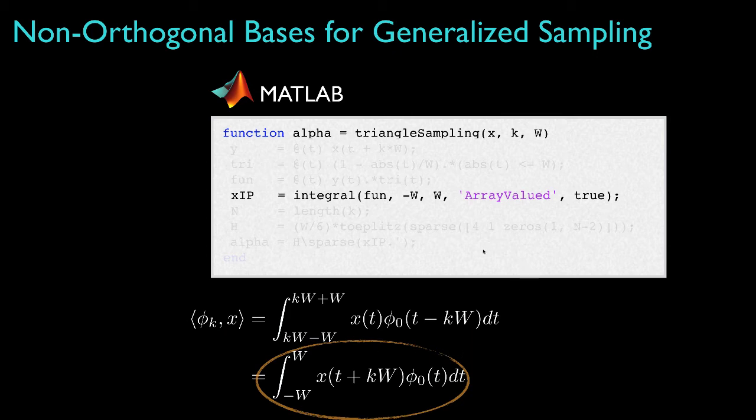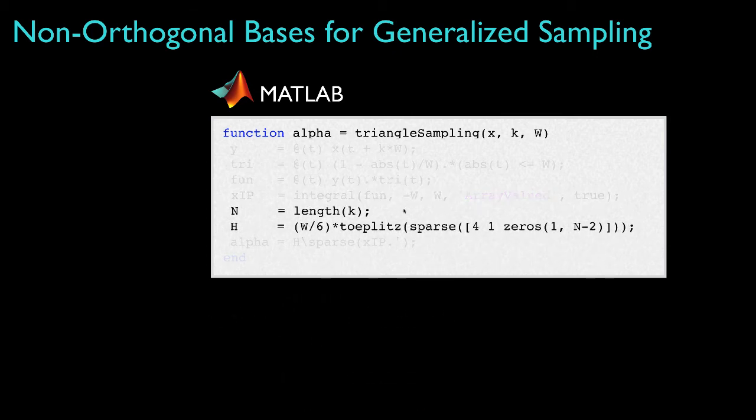Because the indices k will in general be a vector of values, I need to let MATLAB know that the result will be vector valued, that is one integral for every index, and so I have to tell it that array valued is true.